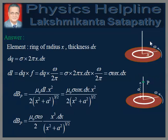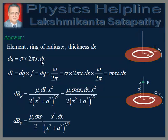This is the disc. We will consider an elementary element of the disc which is a ring of radius x and thickness dx. Therefore area is equal to 2πx dx. Therefore charge on this element is given by dq = sigma × 2πx dx.